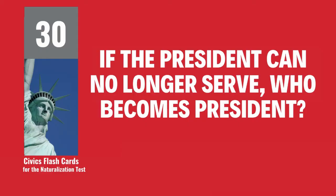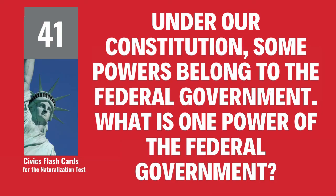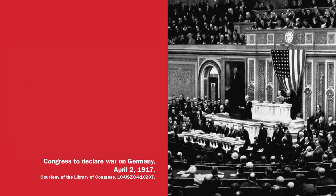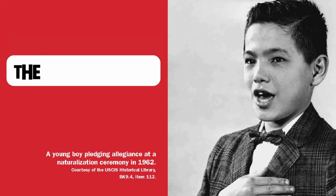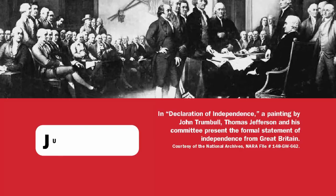If the President can no longer serve, who becomes President? The Vice President. Under our Constitution, some powers belong to the federal government. What is one power of the federal government? To print money. What do we show loyalty to when we say the Pledge of Allegiance? The United States. When was the Declaration of Independence adopted? July 4, 1776.